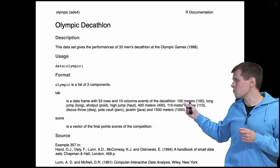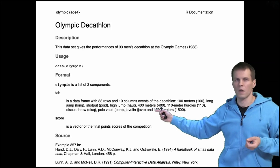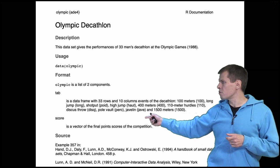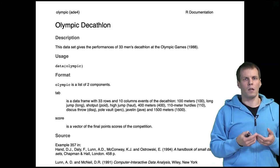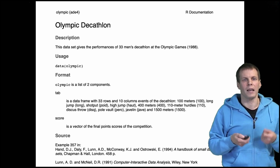Decathlon is a sport where you have to do 10 individual sports: 100 meters run, long jump, shot put, high jump, 400 meters run, 110 meter hurdles, discus throw, pole vault, javelin throw, and 1500 meter run. We're going to factor analyze the data but before we do, let's take a look at what the data look like.